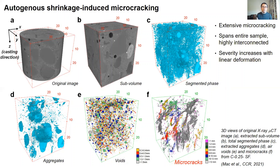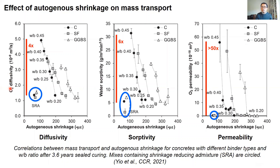Here we show measured diffusivity, desorptivity, and permeability of concrete plotted against autogenous shrinkage for different binder types after more than three years of sealed curing. We can see that the use of shrinkage-reducing admixtures is highly effective in reducing the amount of microcracking and consequently the mass transport. The residual effect of microcracking is close to a factor of four or six for diffusivity and desorptivity respectively, but a factor of more than 50 for permeation, again highlighting the sensitivity of pressure-induced flow. Therefore, microcracks that are interconnected and span the entire sample can have a huge impact on transport. The data shows that the performance of blended concretes containing SCMs can be significantly improved by preventing these microcracks from forming in the first place.